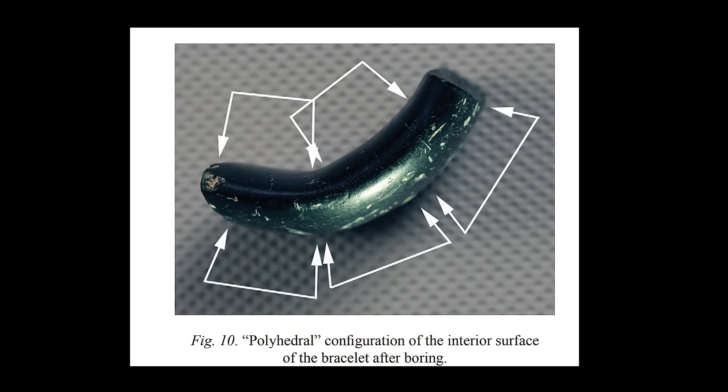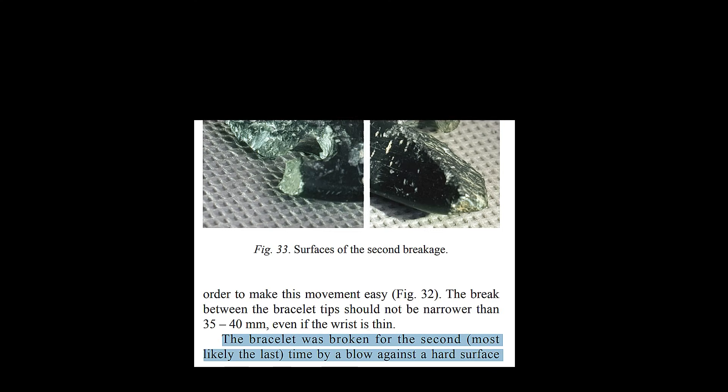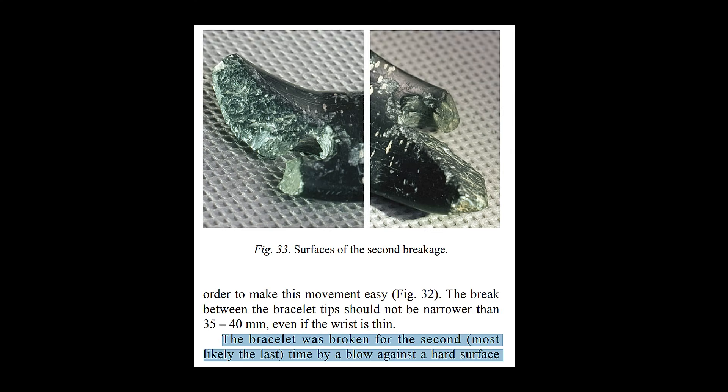Denisovans would have needed to combine mechanical drilling with the use of abrasive materials to aid in the precision and speed of the process. Fine sand, quartz, or other minerals could have been applied to the drill tip, acting as a cutting agent to enhance the tool's efficiency.